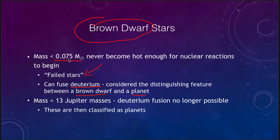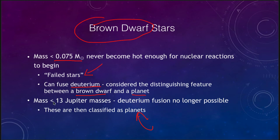Anything greater than 0.075 solar masses is classified as a star. Anything between 0.075 solar masses and about 13 Jupiter masses is classified as a brown dwarf. Anything less than about 13 Jupiter masses is classified as a planet. Jupiter is sometimes considered almost a star, but it's not even close — we'd need 13 Jupiters just to reach brown dwarf status, and many more to reach star status. If we combined all the mass of every other planet and object in the solar system except the sun, we would not even have one more Jupiter mass.